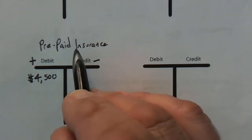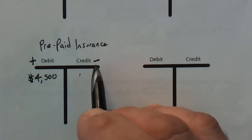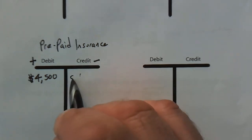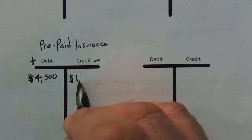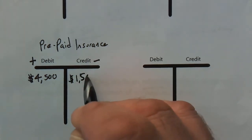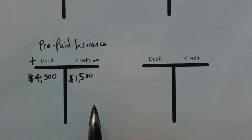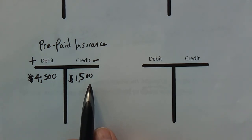And because prepaid insurance is an asset, I reduce it with credits. So I'm going to credit $1,500. That's my credit entry. I need to have an equal and opposite debit entry.